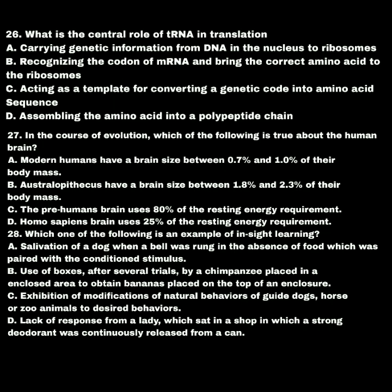In the course of evolution, which of the following is true about the human brain? A. Modern humans have brain size between 0.7% and 1.0% of their body mass. B. Australopithecus have a brain size between 1.8% and 2.3% of their body mass. C. The pre-human brain uses 80% of the resting energy requirement. D. Homo sapiens brain uses 25% of the resting energy requirement. Modern humans have brain size between 0.7% and 1.0% of their body mass.